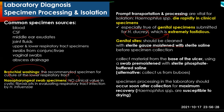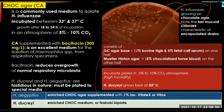Specimen processing in the laboratory should occur soon after collection for maximum recovery. The commonly utilized medium to isolate H. influenzae is chocolate agar, and incubation should be between 33 to 37 degrees Celsius, with growth observed after 18 to 24 hours requiring an atmosphere of 5 to 10 percent CO2. Chocolate agar supplemented with bacitracin 300 mg per liter is an excellent medium for the isolation of Haemophilus species from respiratory specimens.